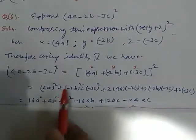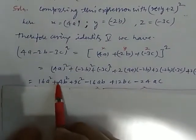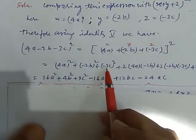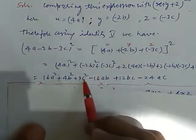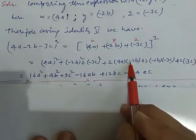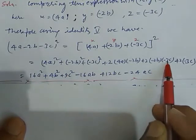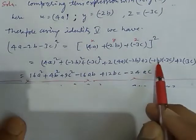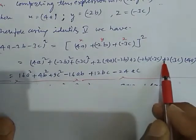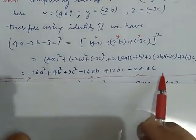Now solve this. 4a whole square means 4a into 4a — that is 16a squared. Now, minus 2 into minus 2 is plus 4b squared. Minus 3 into minus 3 is plus 9c squared. Now multiply these terms: 2 times 4 is 8, 8 times 2 is 16, and here minus into plus is minus 16ab. Here 2 times 2 is 4, times 3 is 12, but minus into minus is plus, so this is plus 12bc. Now multiply: 4 times 3 is 12, into 2 is 24, and plus into minus is minus, so this becomes minus 24ac. So, this is our solution.